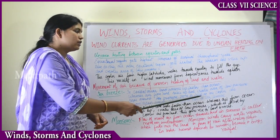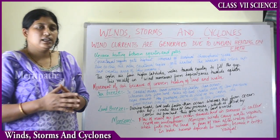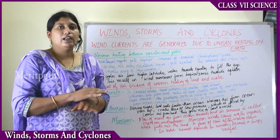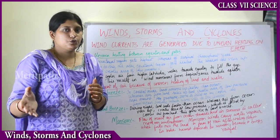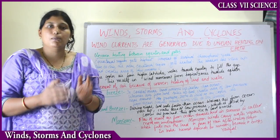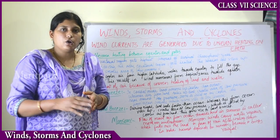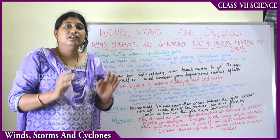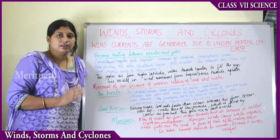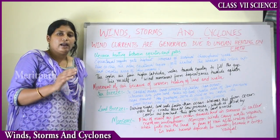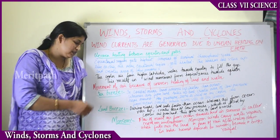The low pressure zone is filled by cooler air from the ocean surface, giving rise to the sea breeze. In the daytime, the heated air above the land rises into the sky, and the cooler air from the ocean flows in to fill that space. This is how sea breeze is created during daytime in coastal areas.